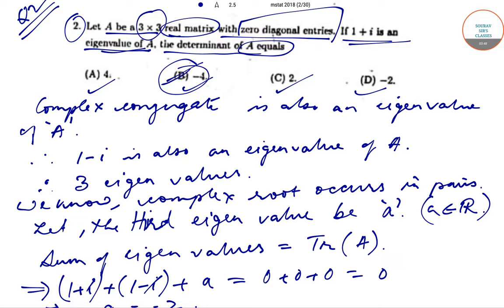So the correct option is B. Today we solved question number 2 from the ISI M-Stat 2018 question paper. We will solve the next questions in subsequent videos. Till then, keep watching Solvethis Classes videos for more solutions and content. Thank you very much.